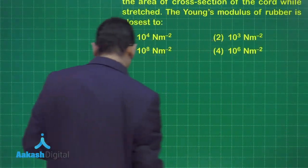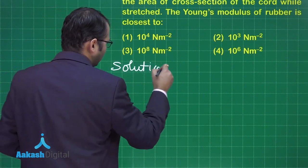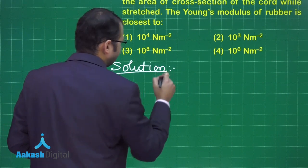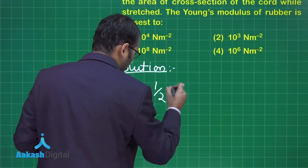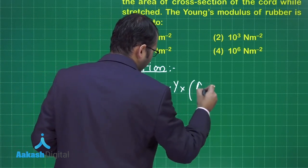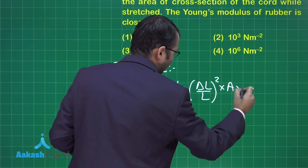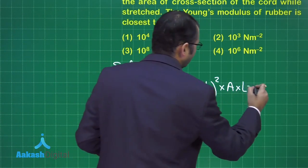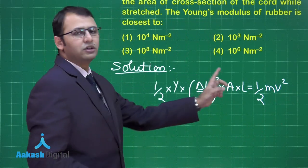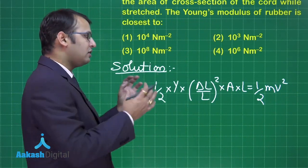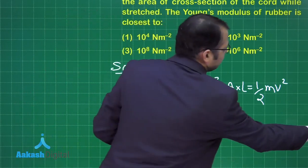It is a simple case where some potential energy was stored in the rubber band which later on led to gain of kinetic energy of that stone. So you will say half into Y into delta L by L whole square into volume, that is area into length, equals half m v square. That is, the total energy stored in the form of stress or strain in the material of rubber has been converted into the kinetic energy of this particle.